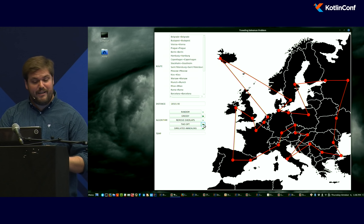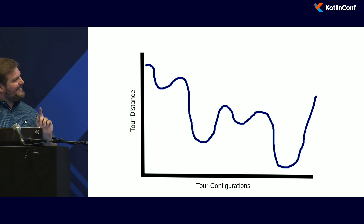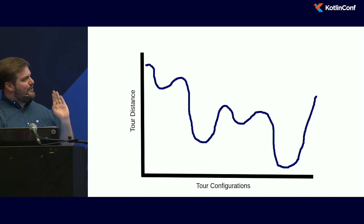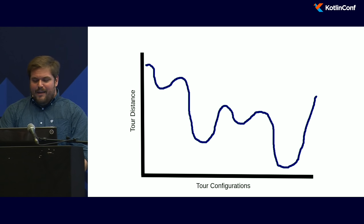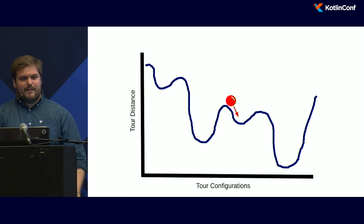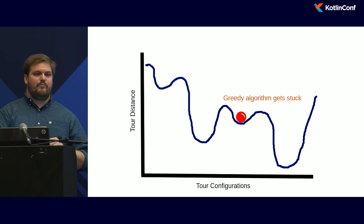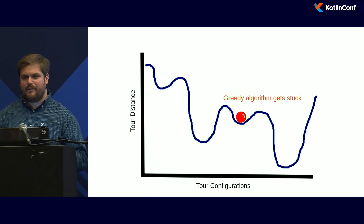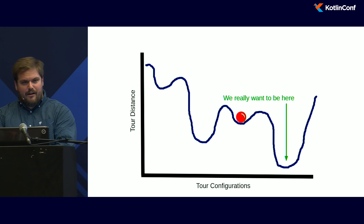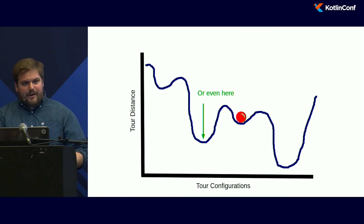I'm fairly confident the global minimum we can achieve is 17,509. Here's an abstract graph of the various tour configurations and their distances. What happens is we have all these local minima — the lowest one is called the global minimum, which is ideally where we want to be. Our two-opt algorithm swaps two random edges at a time, but ultimately gets stuck in local minima. It only sees one move ahead and can't see any improvement, so it stops. When you're dealing with more permutations than there are atoms in the universe, we'll settle for good enough rather than optimal.